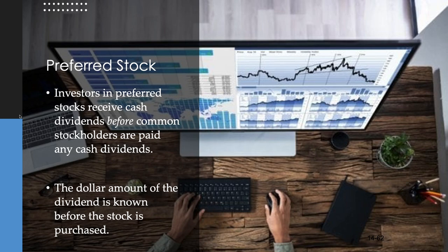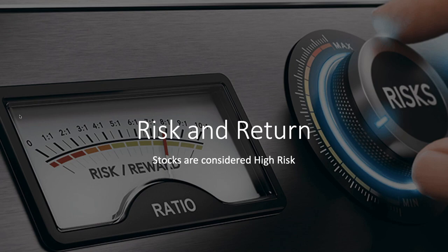Preferred stock comes before common stock in a bankruptcy liquidation, and the very last people to ever get any money from a bankrupted company would be common stockholders — and that's usually never going to happen; all that money is gone. As you purchase preferred stock, it is already at a set price and you know the dividend you're going to get. The one thing about preferred stock is it does not vote. The common stockholders vote for the board of directors who then make decisions, so common stock is powerful in terms of who gets to control the company.